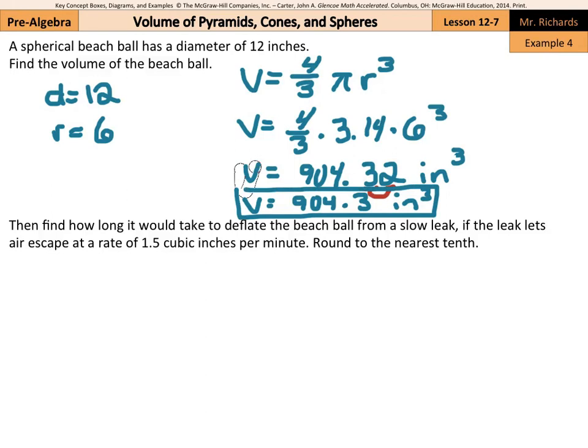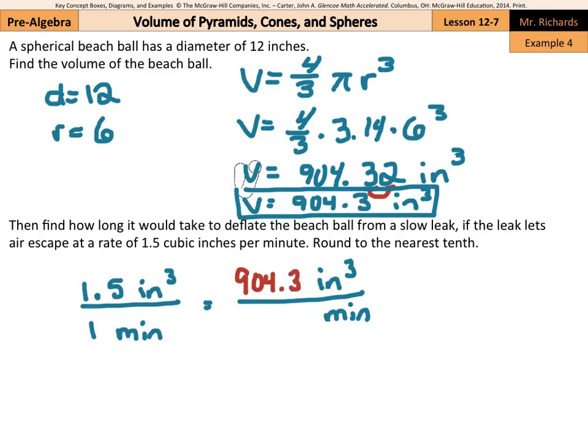Then, find how long it would take to deflate the beach ball from a slow leak. If the leak lets air escape at a rate of 1.5 cubic inches per minute, round to the nearest tenth. Well, what we're going to do here is set up a proportion. We're given that it's escaping at 1.5 cubic inches per one minute. If we set that equal to another proportion that's inches cubed per minute, we can put our volume in here at 904.3 for our x minutes. That's what we're looking for.